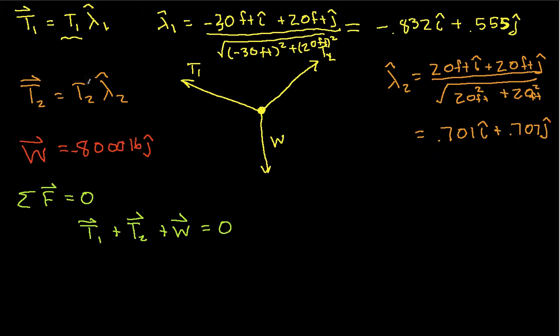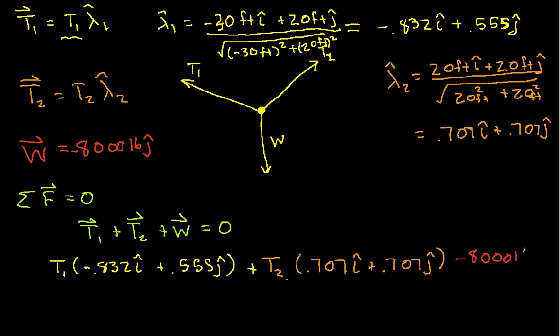T1 is going to be T1 times minus 0.832 i-hat plus 0.555 j-hat plus T2 times 0.707 i-hat plus 0.707 j-hat. W will be minus 8,000 pounds j-hat, and this is equal to 0.